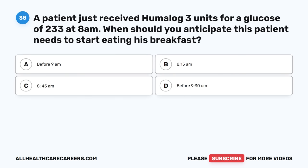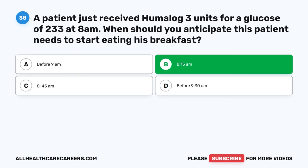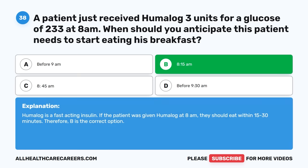Question thirty-eight: A patient just received Humalog 3 units for a glucose of 233 at 8 a.m. When should you anticipate this patient needs to start eating breakfast? A. Before 9 a.m. B. 8:15 a.m. C. 8:45 a.m. D. Before 9:30 a.m. The correct answer is B, 8:15 a.m. Humalog is a fast-acting insulin. If the patient was given Humalog at 8 a.m., they should eat within 15 to 30 minutes; therefore, B is the correct option.